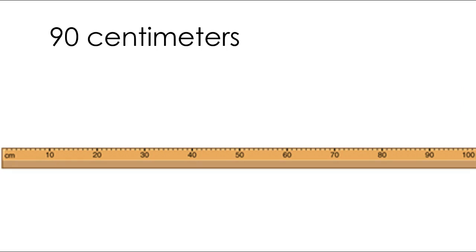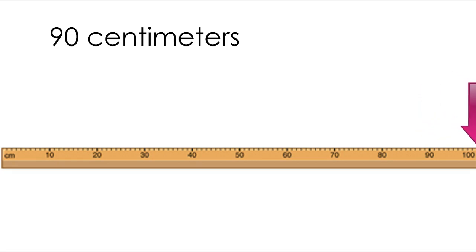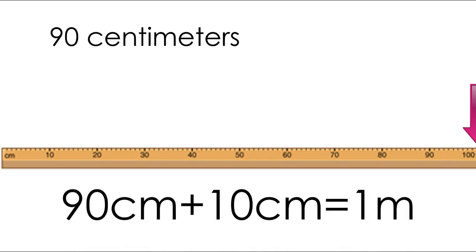Here's our next one. We're starting at 90 this time. I want you to go ahead and count how many more centimeters we need — remember, we're counting by tens — to make 1 meter. Also write down your number sentence. Push pause and then push play when you're done. So let's count how many more we need: 10. We only need 10 more to make 1 meter. My number sentence: 90 plus 10 equals 1 meter.